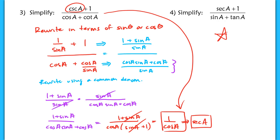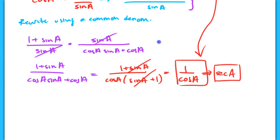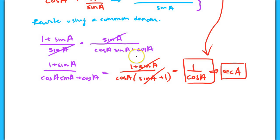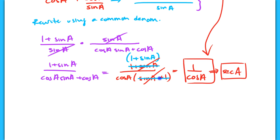A clarification on the cancellation: when I canceled the factor, the entire expression 1 plus sine of a must go together as one factor. For example, sine of a over sine of a plus 1 does not cancel to give 1 over 1 — you need the exact same factor in both numerator and denominator. So it's the entire expression 1 plus sine of a that cancels, leaving 1 in the numerator, giving 1 over cosine of a.